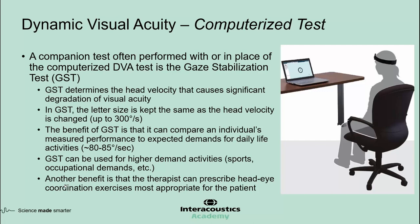There is a companion test called the gaze stabilization test, or GST, which some systems provide. GST is often performed with or in place of the DVA test. GST determines the head velocity that causes significant deterioration of visual acuity. The main difference is that in GST, the letter size is kept the same and it's the head velocity that changes, ranging from as low as 30 degrees per second to as high as 300 degrees per second. The benefit of GST is that it can compare an individual's performance with expected demands of daily activities. For example, patients whose GST results are lower than 80 to 85 degrees per second should be advised that they are at risk of falling.